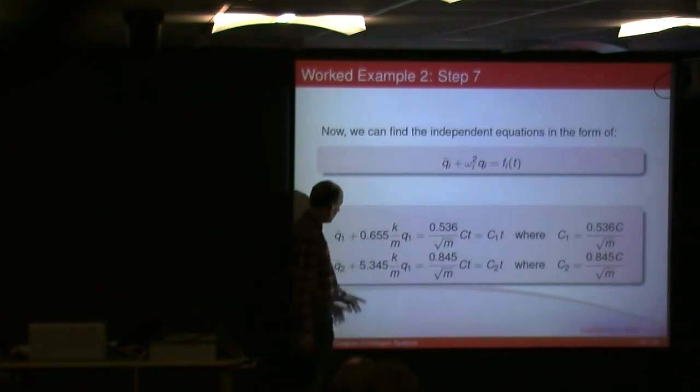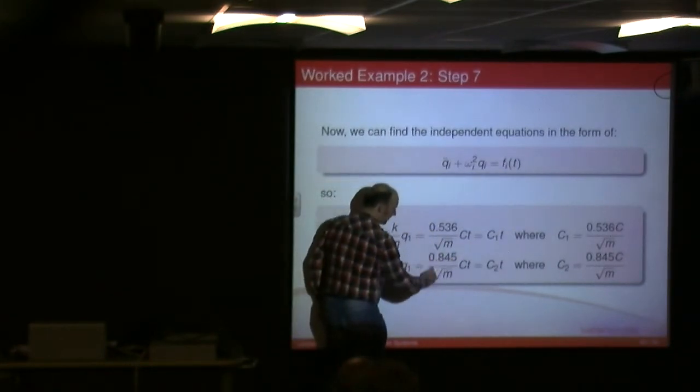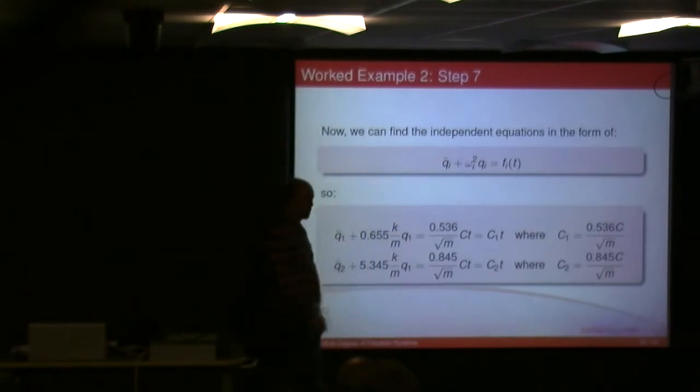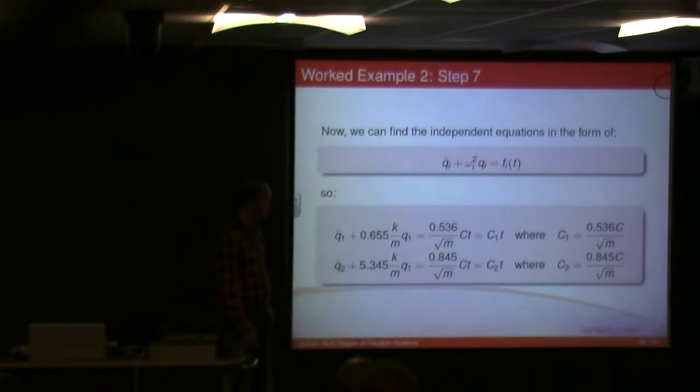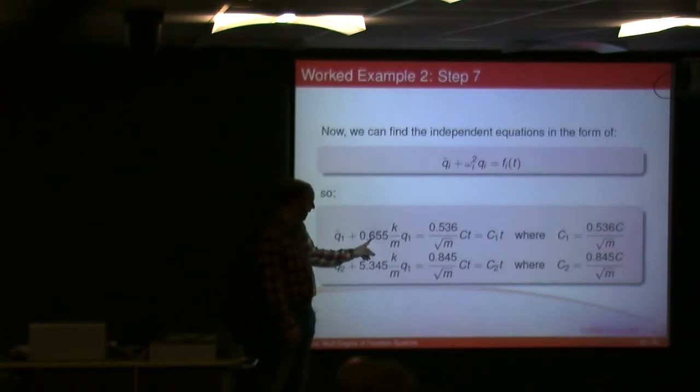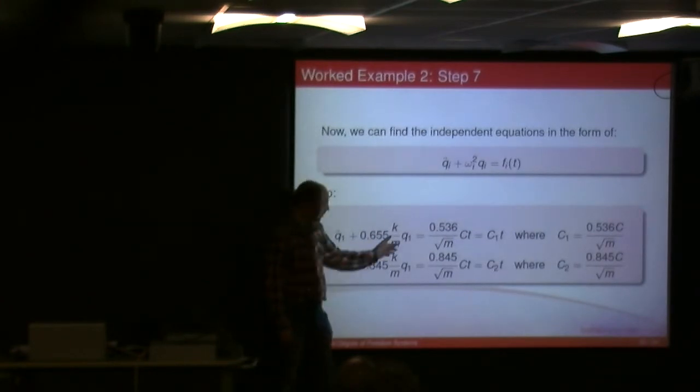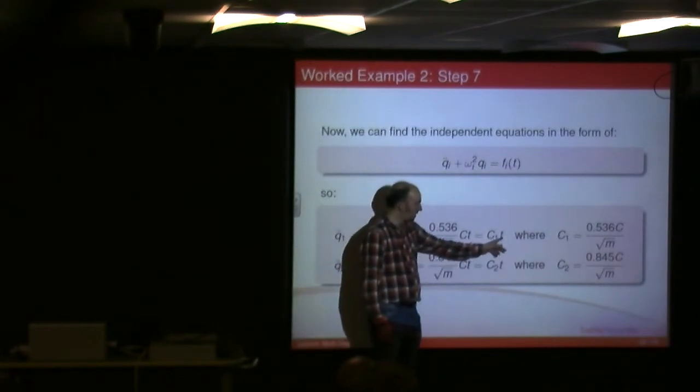And this term equals C2, again, just to make life simple. And so you can see quite clearly that we have Q double dot times by omega, well this is Q1 double dot times by omega 1 squared times by Q1 equals C1 times by T.